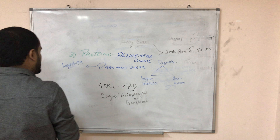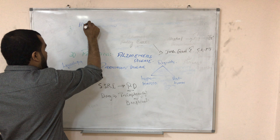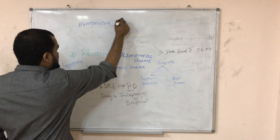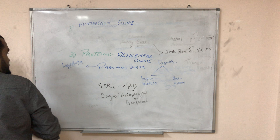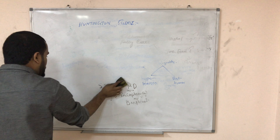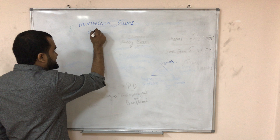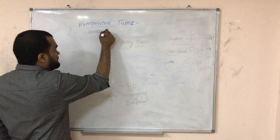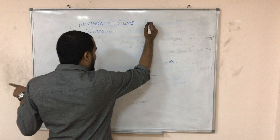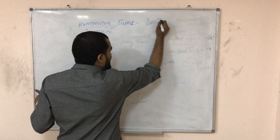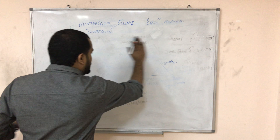Next, due to protein accumulation, there is Huntington's disease. Normally there is a protein called chaperone that corrects misfolded proteins during molecular processes. But in Huntington's disease, chaperones are deficient or absent.